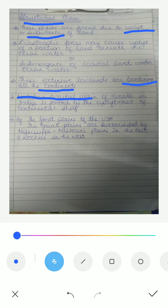Other examples of structural planes are the Great Plains of USA, surrounded by the Mississippi River, Missouri plains in the east, and the Rockies in the west. So it's clear that these structural planes are the most natural lowlands.